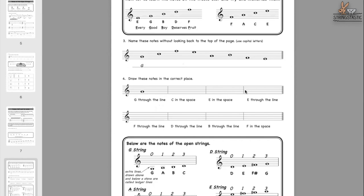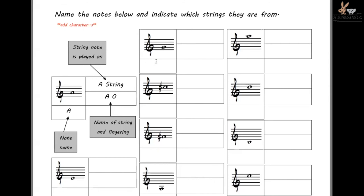By this point, students understand the open strings, know how to read notes through the lines and in the spaces, and know the notes of each string. Use a worksheet: first, name the notes. Then tell me which string it's from. Then tell me which finger you'll use — finger zero, one, two, or three. This combines the Suzuki method with the traditional note-naming approach, and students have to recognize which string a note is from.